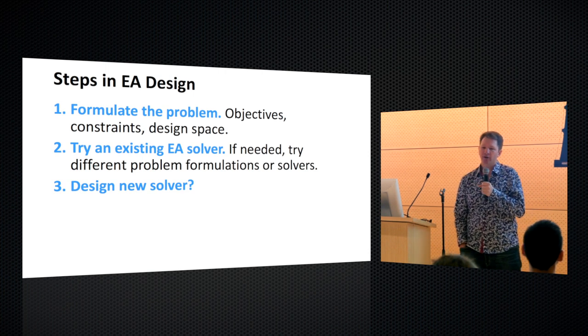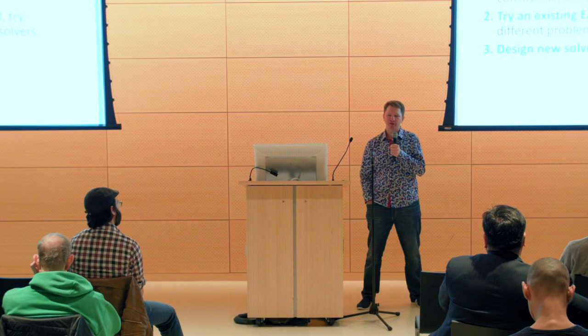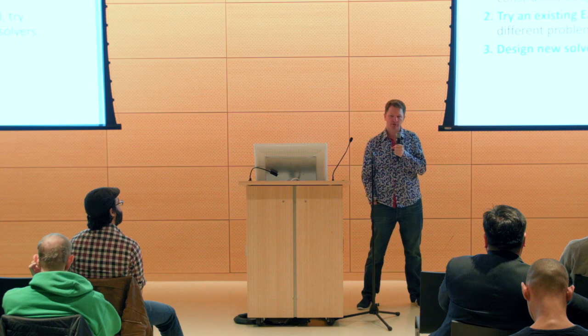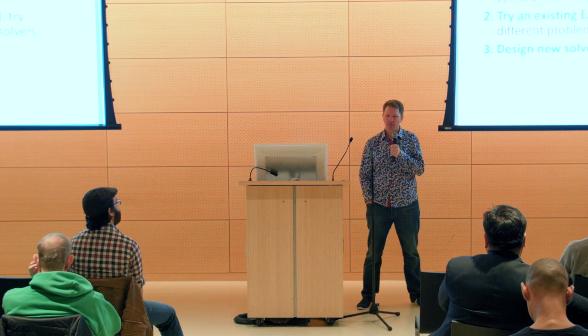And then only if needed do you design a new solver — a new evolutionary algorithm or otherwise. It's really tempting to do that upfront because it's fun, but you can easily lose months or years of your life. So if you can have the discipline to first write down what you're trying to go for in terms of very specific objectives, constraints, and design space, and then use off-the-shelf patterns, you can save yourself a lot of time and heartache, and spend your real energy on what actually needs inventing.